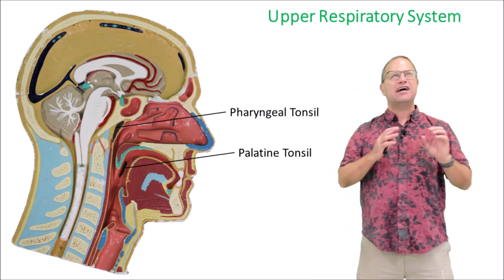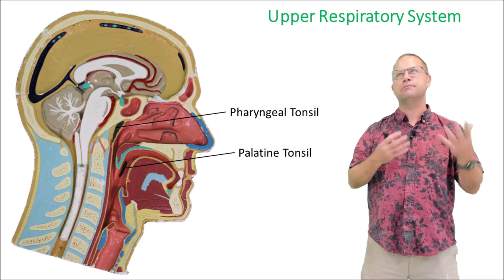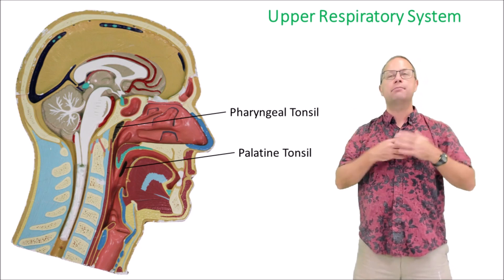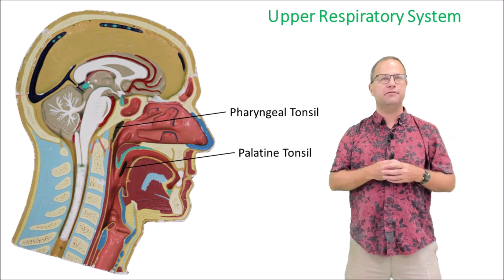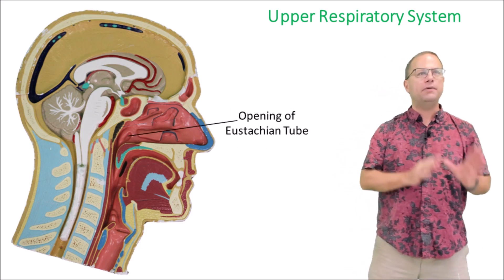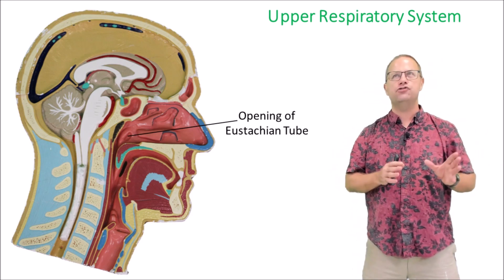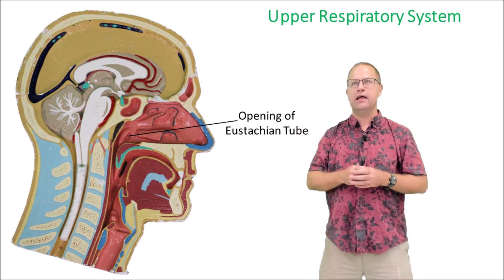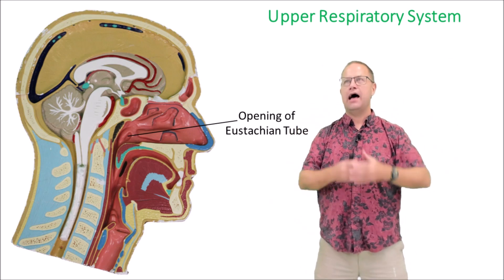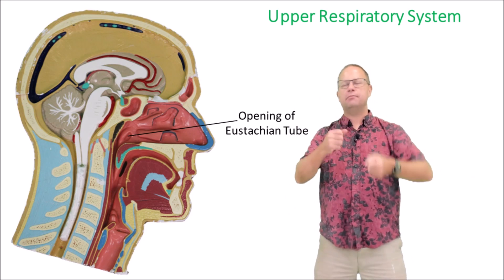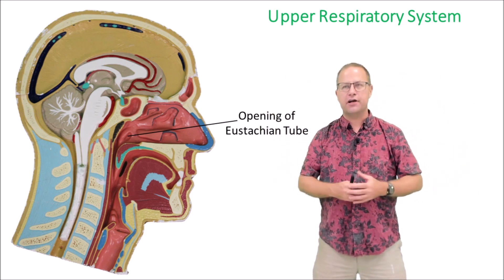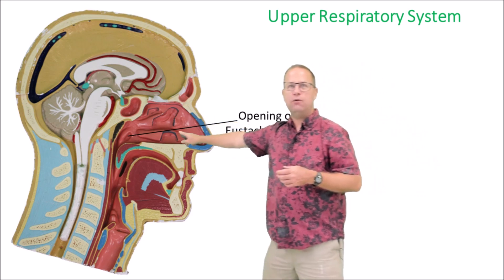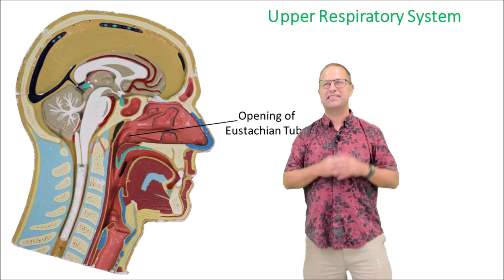Before we get there, we need to talk about the tonsils. Tonsils are part of our immune system. It used to be thought that tonsils were useless, so if somebody got tonsillitis more than a couple times during childhood, they'd just pull them out. But now we know that tonsils do serve an important immune function, so we tend to leave them in if at all possible. We also have the opening of the Eustachian or auditory tube, which goes from the middle ear to the back of the nasopharynx. Its purpose is to allow equilibration of air pressure in the middle ear with surrounding atmospheric pressure — like when you're driving up a mountain and feel pressure in your ears, you yawn or jut your jaw to open this aperture and allow excess gas to escape into the nasopharynx.